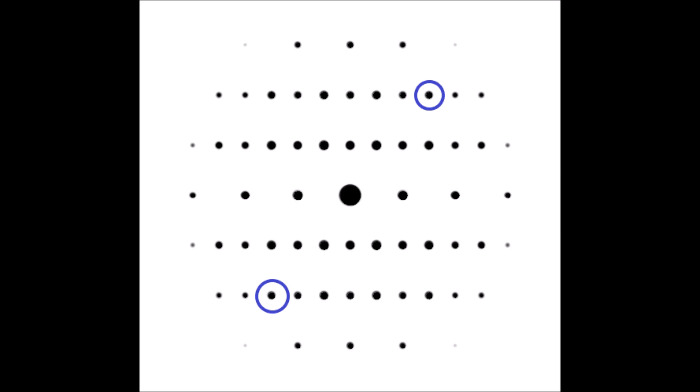And so depending on how far off of the zone axis I am, I may actually even see a ring or a circle, which we call a Lowey circle, form in the diffraction pattern, which again is an extreme example of what happens when you're not aligned with the zone axis.